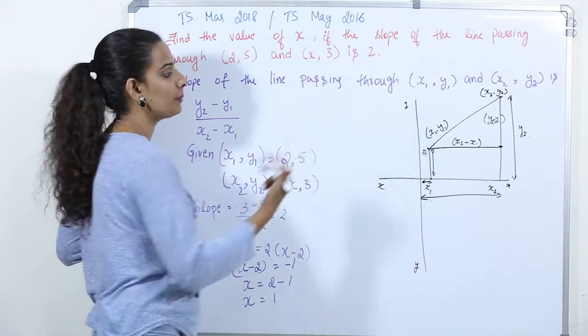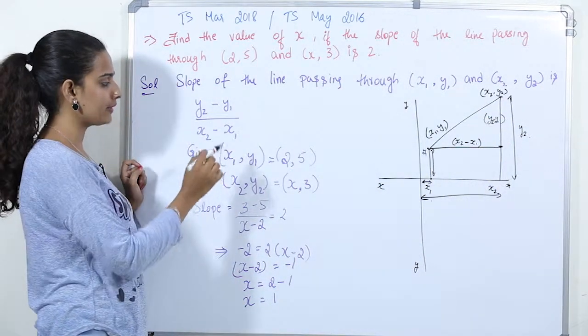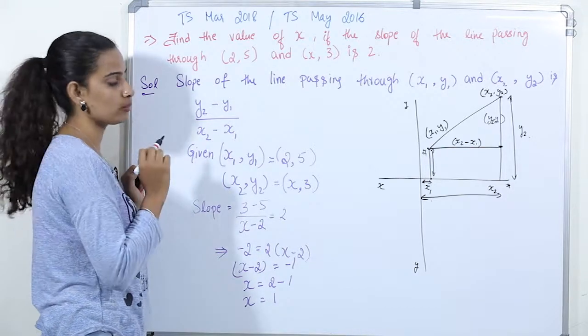So, this slope is (y2 minus y1) divided by (x2 minus x1).